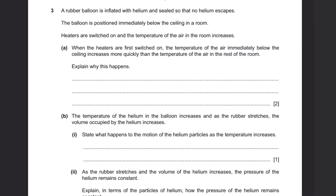Question 3: A rubber balloon is inflated with helium and sealed so that no helium escapes. The balloon is then positioned immediately below the ceiling in a room. Heaters are switched on and the temperature of the air in the room increases. Question A: When the heaters are first switched on, the temperature of the air immediately below the ceiling increases more quickly than the rest of the room. Explain why. This happens because heated air is lighter than cold air, so it immediately rises up to the ceiling.